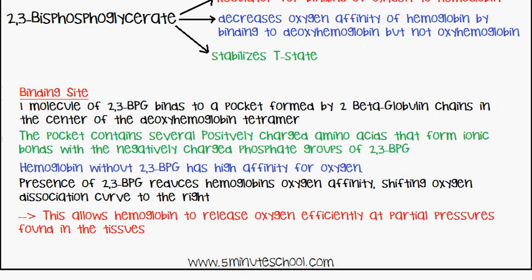Hemoglobin without 2,3-bisphosphoglycerate has a high affinity for oxygen. The presence of 2,3-bisphosphoglycerate reduces hemoglobin's oxygen affinity, shifting the oxygen dissociation curve to the right.